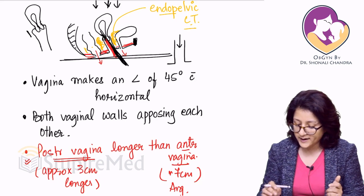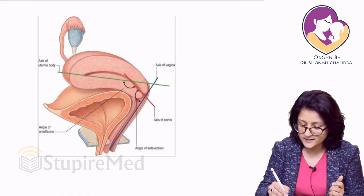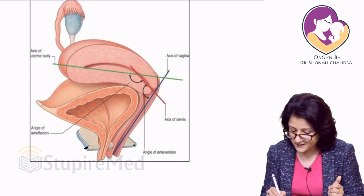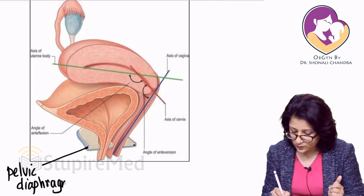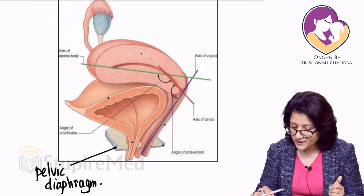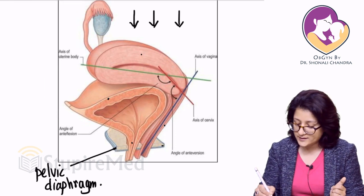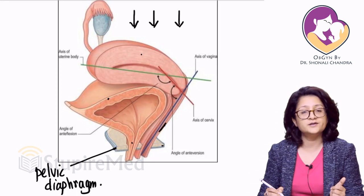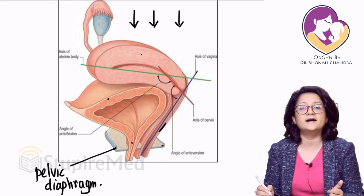You have to appreciate that in a normal anatomical position, as shown in this figure, the pelvic diaphragm is seen here. Any force or push from above transmitted directly downward — we can see that the vagina is inclined at an angle to the horizontal. Also, the uterus is anteverted and anteflexed, and resting on top of the bladder.